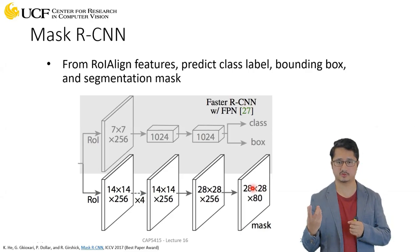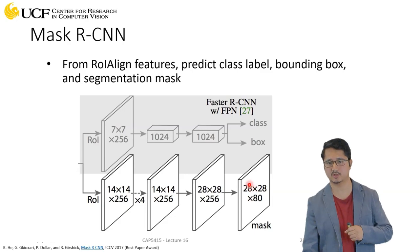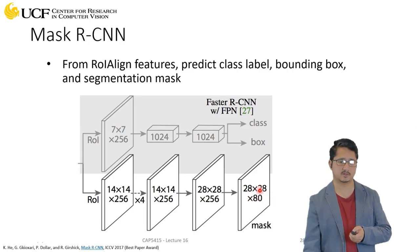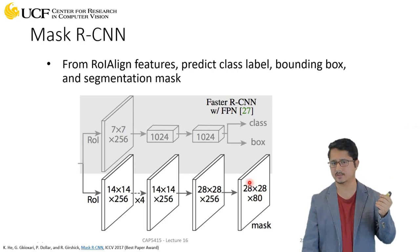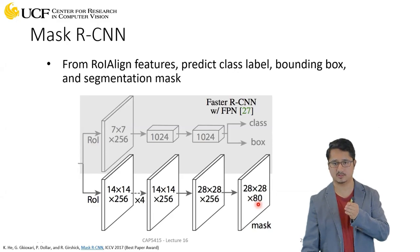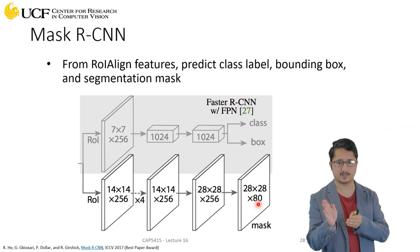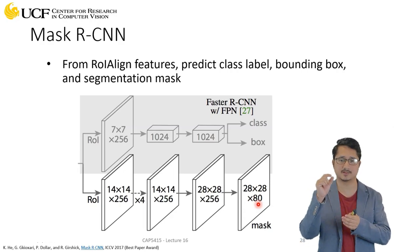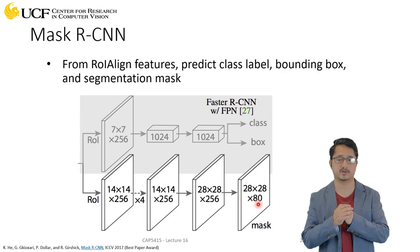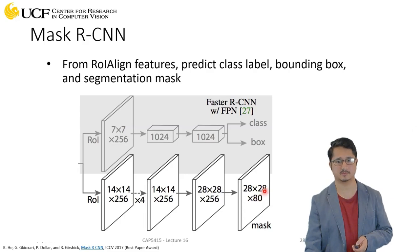There are 80 different semantic categories, so we have one channel per category. Since you know from the ground truth which category a proposal belongs to — say cat — for 79 of the 80 channels you predict background, and only for the cat channel do you predict foreground or background per pixel. So it's a binary problem per channel: is this pixel foreground or background for this category? Having 80 channels allows handling multiple semantic labels simultaneously.